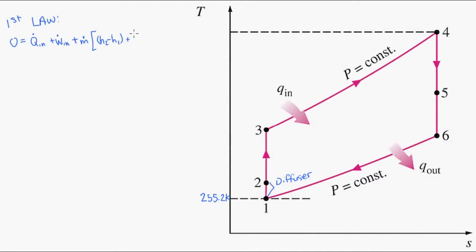So our heat, our work, our enthalpy, our kinetic energy terms, and finally our potential energy terms. Now most of these can be eliminated because in the diffuser these values are zero. So our first law simplifies down to this equation here.